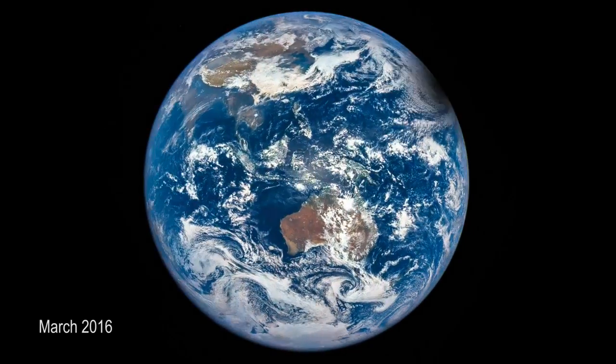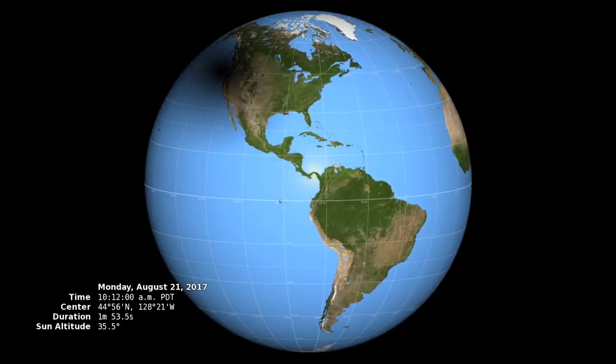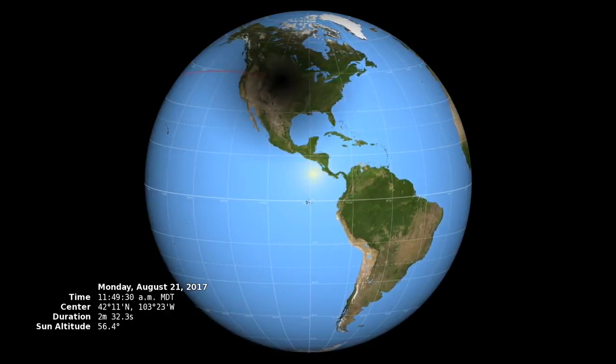NASA's Earth Polychromatic Imaging Camera, called EPIC, will capture images of the moon's shadow passing over Earth.